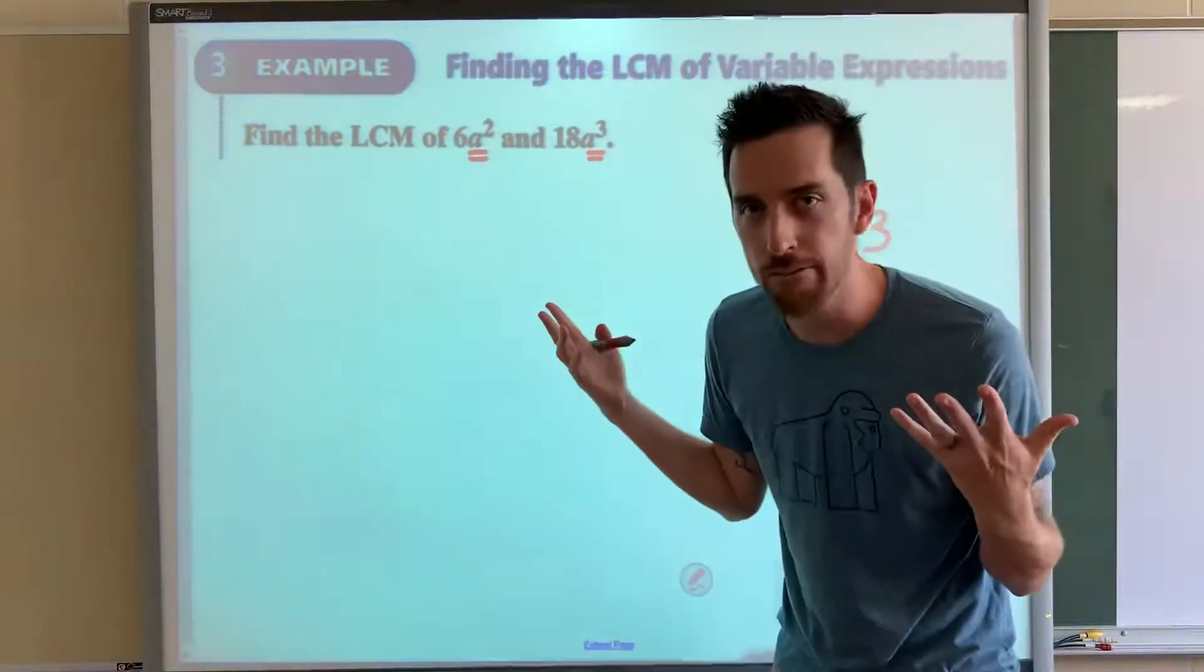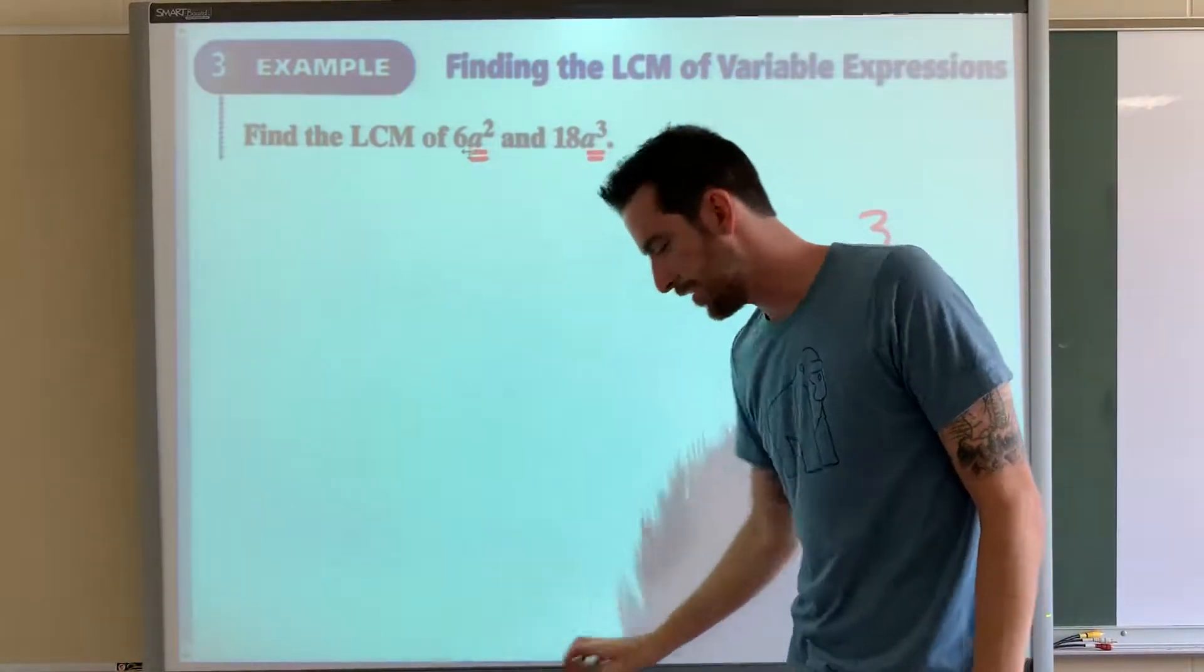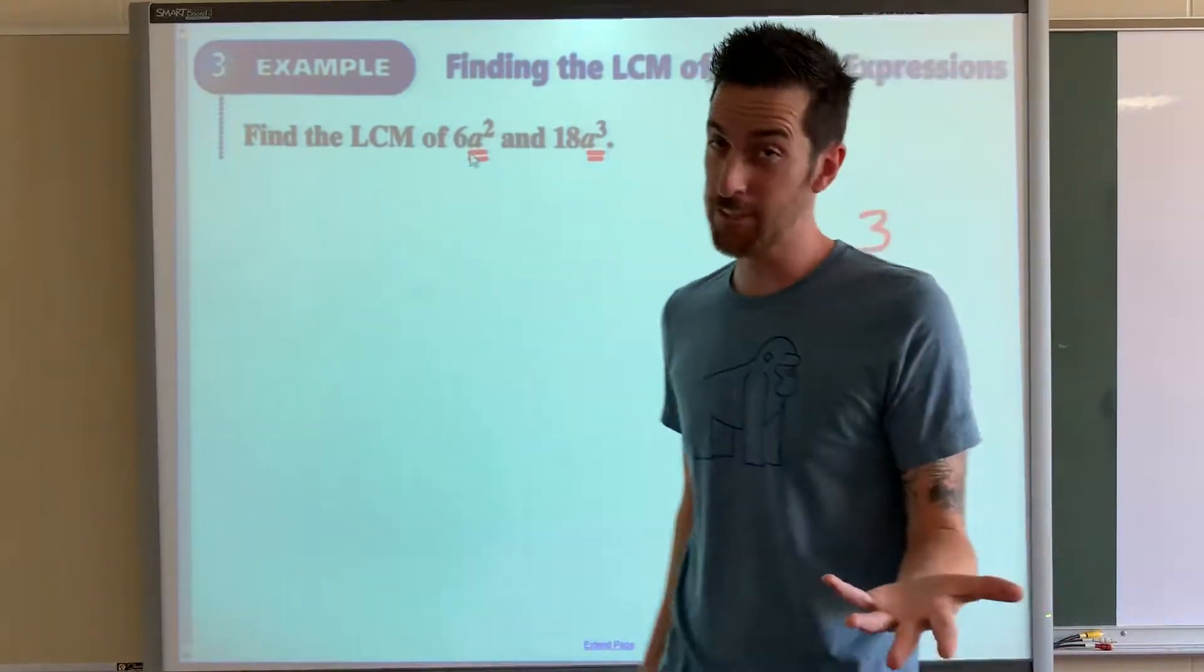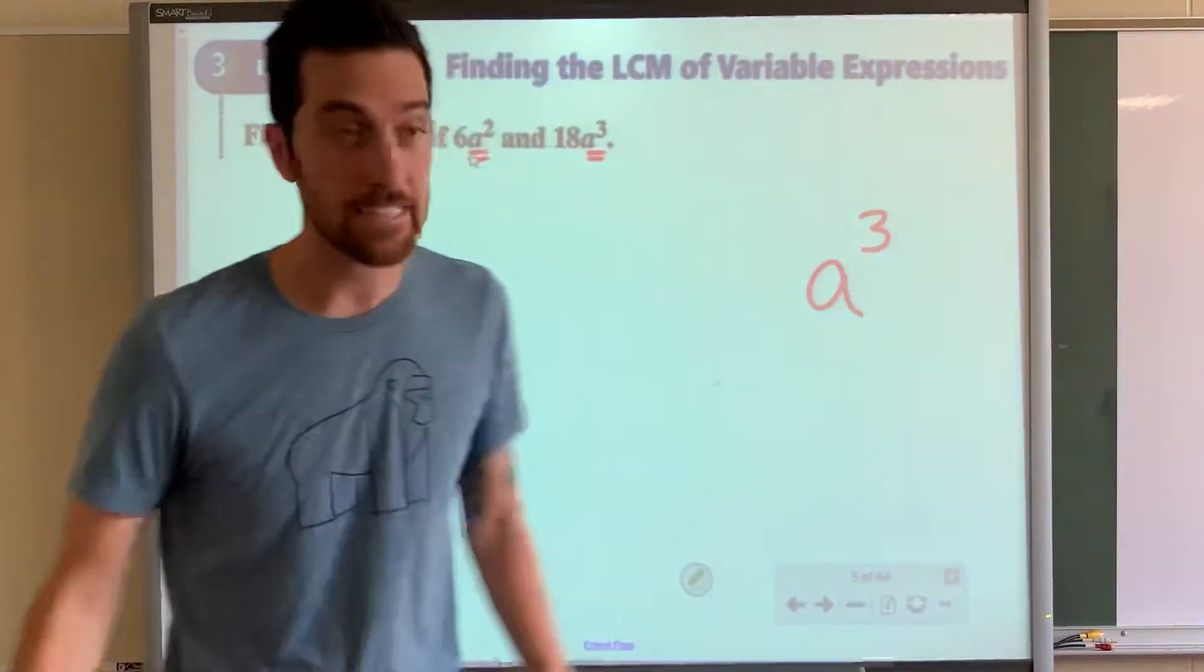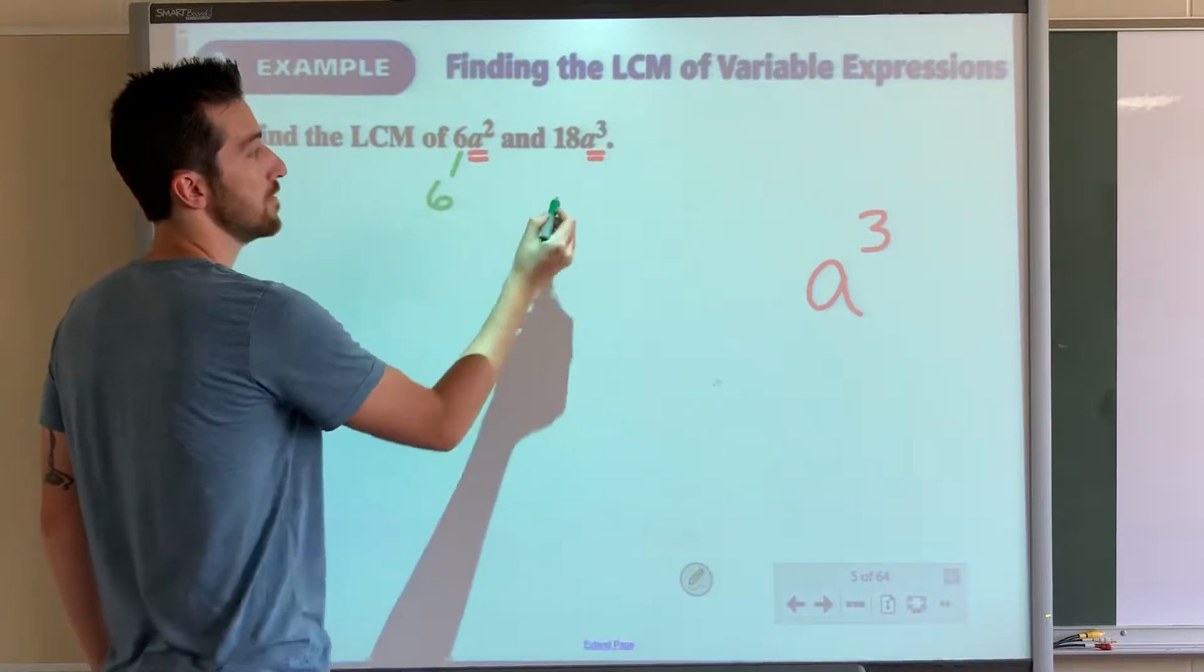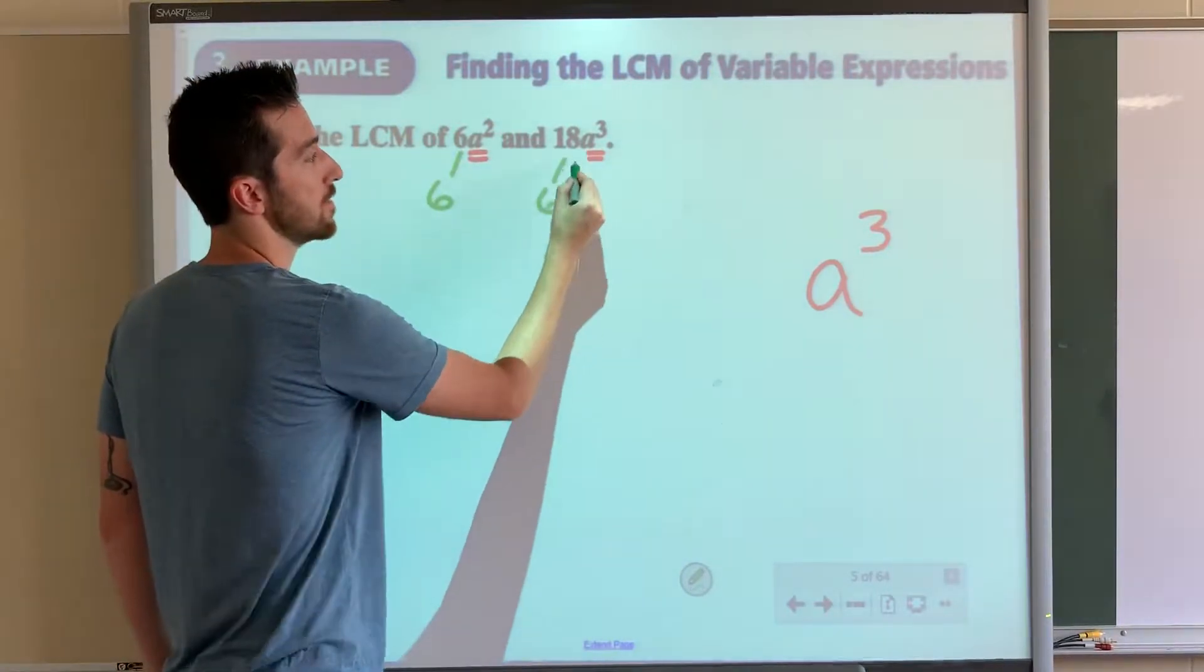Now we can ignore the variables and just work on 6 and 18. Can you think of anything that goes into 6 and 18? 6. So 6 is 6. 18 is 6 times 3.